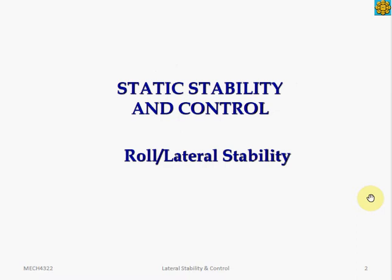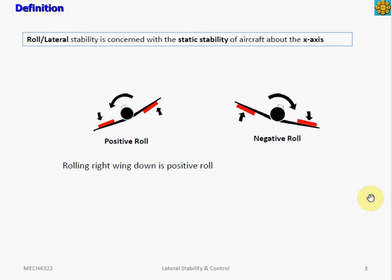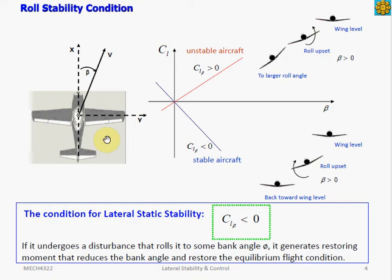Our topic today is lateral stability. Lateral motion consists of rolling moment, which is achieved by differential deflection of the aileron control surface. The lateral stability derivative is CL_beta, which is the derivative of the rolling moment coefficient CL with respect to the sideslip angle beta.